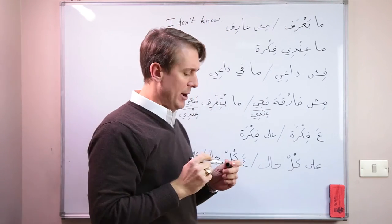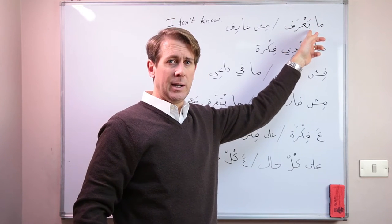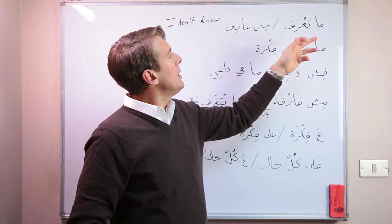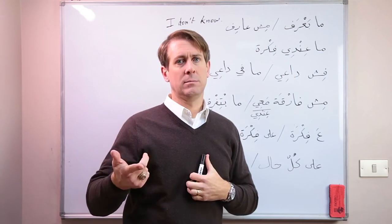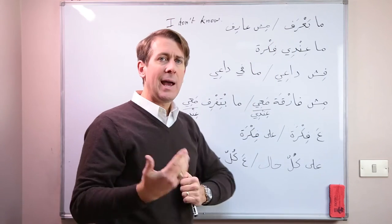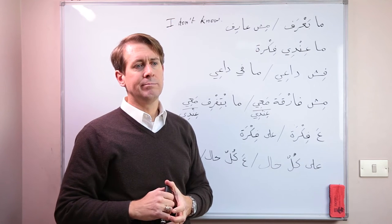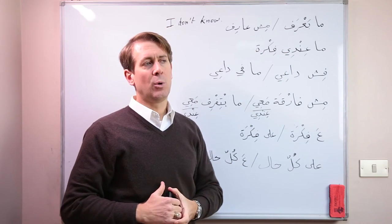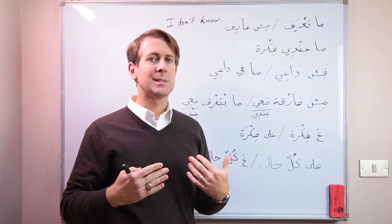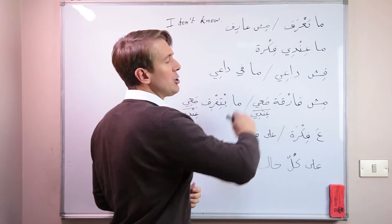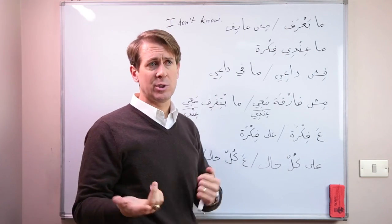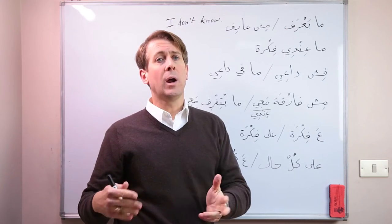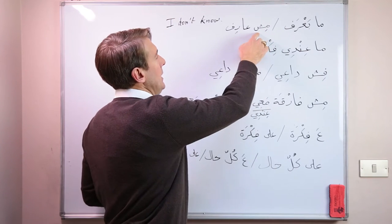There's a fatha above the 'ba' — that 'ba' is what we use with present tense verbs when there's no helping verb. The 'ba' with the fatha means 'ana' — I. So 'ma ba'araf' means 'I don't know.' If somebody asks you where a restaurant is or what you want to do today, you can say 'ma ba'araf.' You can also start a sentence with it, just like in English — 'I don't know what you want from me' or 'I don't know where I want to go.'